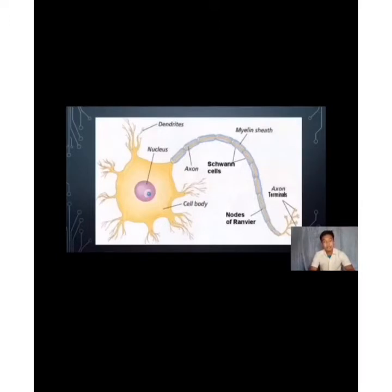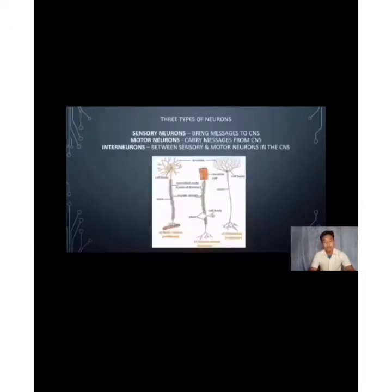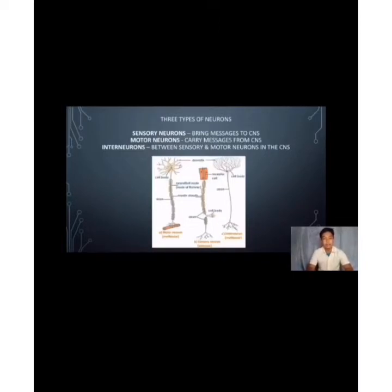There are three types of neurons. First are sensory neurons, which bring messages to the central nervous system. Next are motor neurons, which carry messages from the central nervous system. And lastly, interneurons, which are located between sensory and motor neurons within the central nervous system.